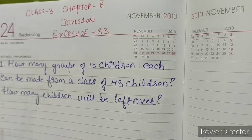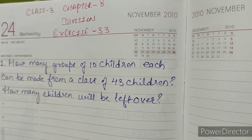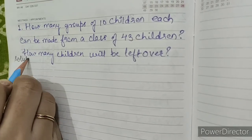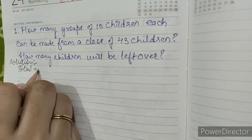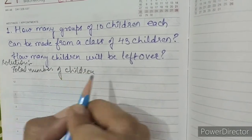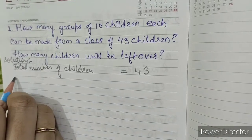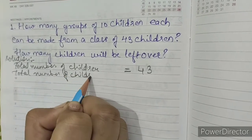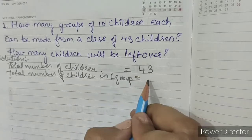How many groups of 10 children each can be made from a class of 43 children? How many children will be left over? Solution. Total number of children equals 43. Total number of children in one group equals 10.